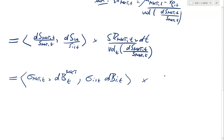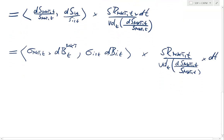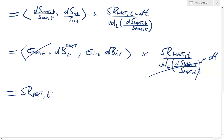Now this gets multiplied by dt. We can factor out sigma_market,t — it's constant as of t and cancels with the other sigma_market,t term, because it's the same conditional volatility for the next period's return. So we have the Sharpe ratio of the market at time t multiplied by the instantaneous covariation of sigma_i,t dB_i,t with dB_market of the market portfolio.